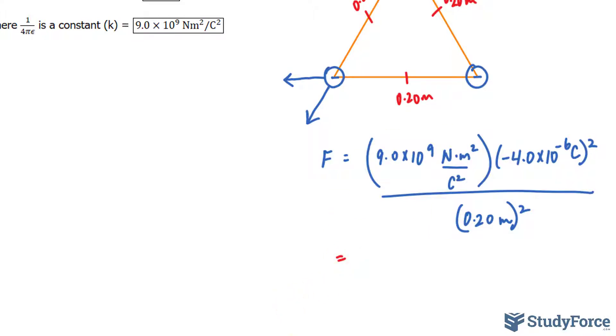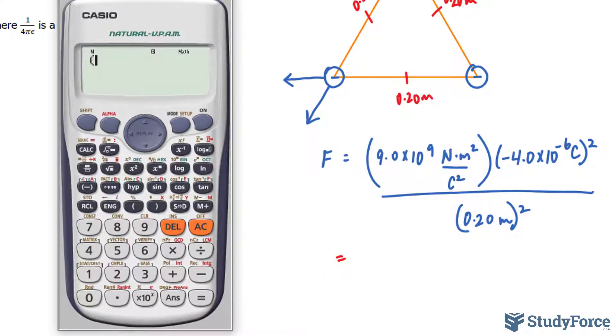Now we'll use our calculator to calculate the force. We start with the first factor and make sure that you put each factor in its own parentheses. That way, our calculator gives us the right number at the very end. We have negative 4.0 times 10 to the power of negative 6, and that's being raised to the power of 2.